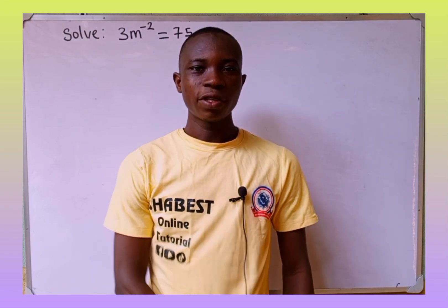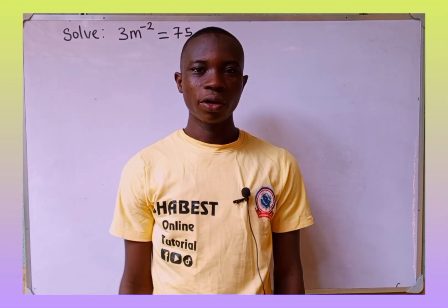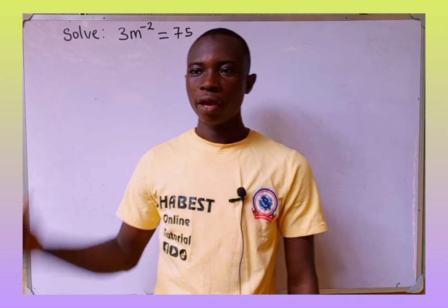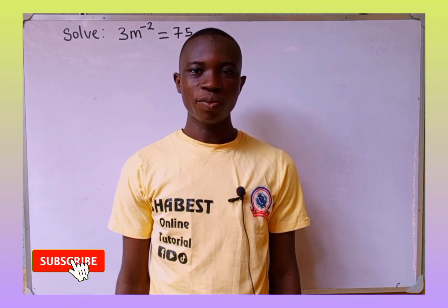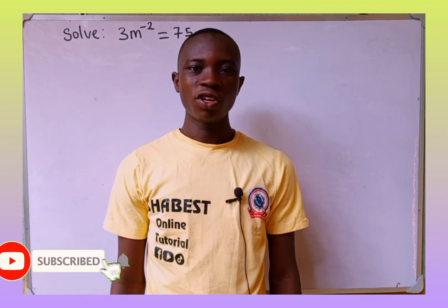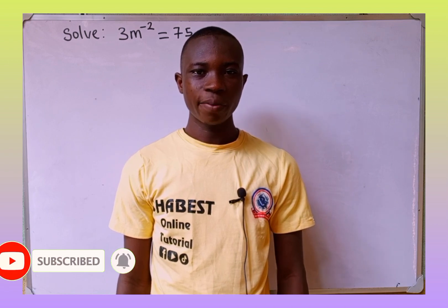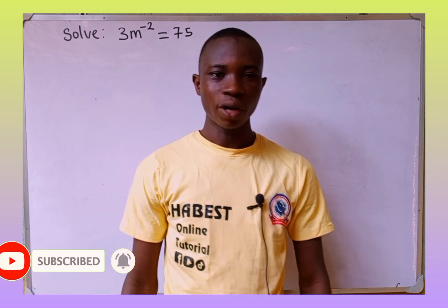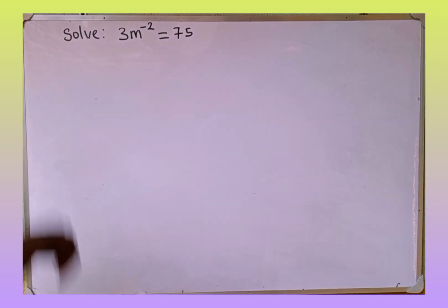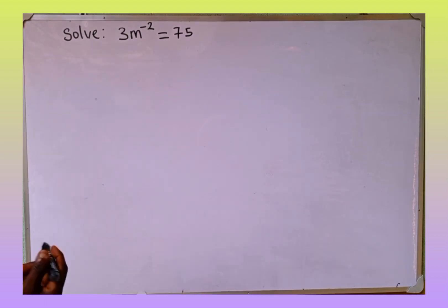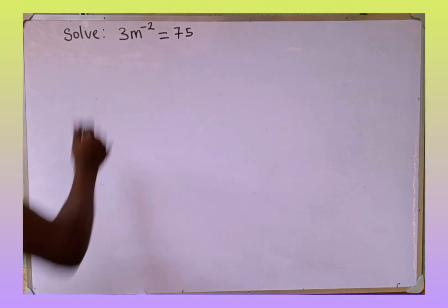Hi guys, welcome back to Shabez online tutorial. In today's tutorial we are going to learn how to solve for the value of m in this equation. If you are new here consider subscribing to my channel and also follow me on Facebook, TikTok, Instagram at Shabez online tutorial. The equation given is 3m to the power of minus 2 is equal to 75 and we are asked to look for the value of m.